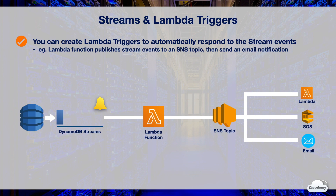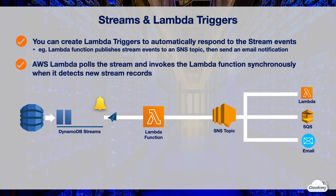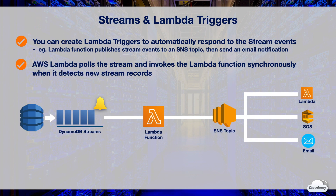Suppose you are building an order process for your online shopping site. You can create Lambda triggers to respond to new orders. Every time a new order item is added to the DynamoDB orders table, a new stream record is published. Lambda pulls the stream and invokes the Lambda function synchronously. You can implement post-order processes in the Lambda function, such as sending order confirmation emails using SNS, and configure SNS to send notifications to multiple endpoints such as email, SQS queues, or another Lambda function.